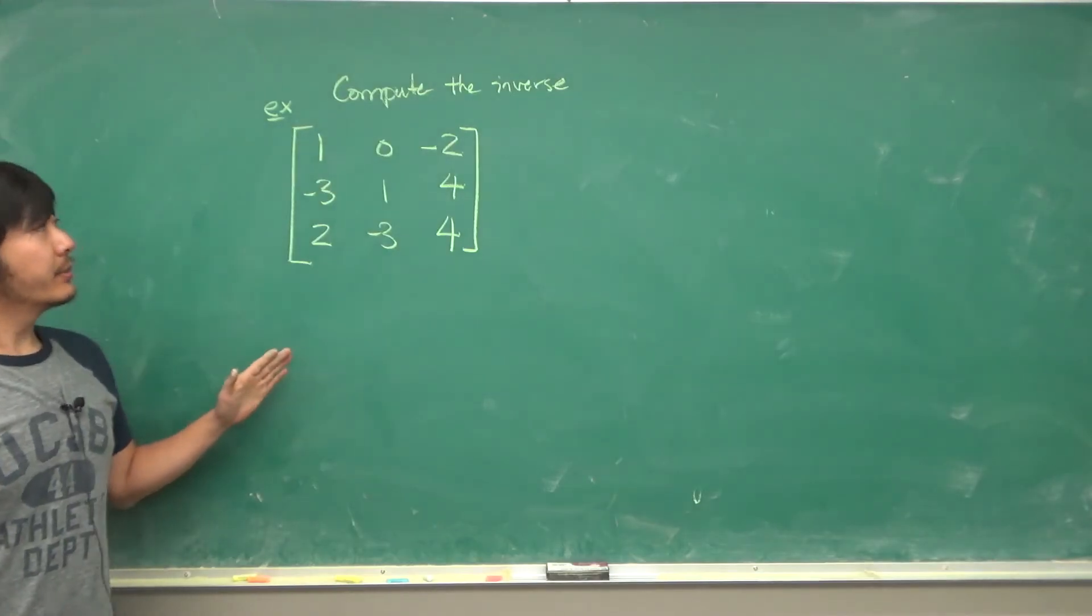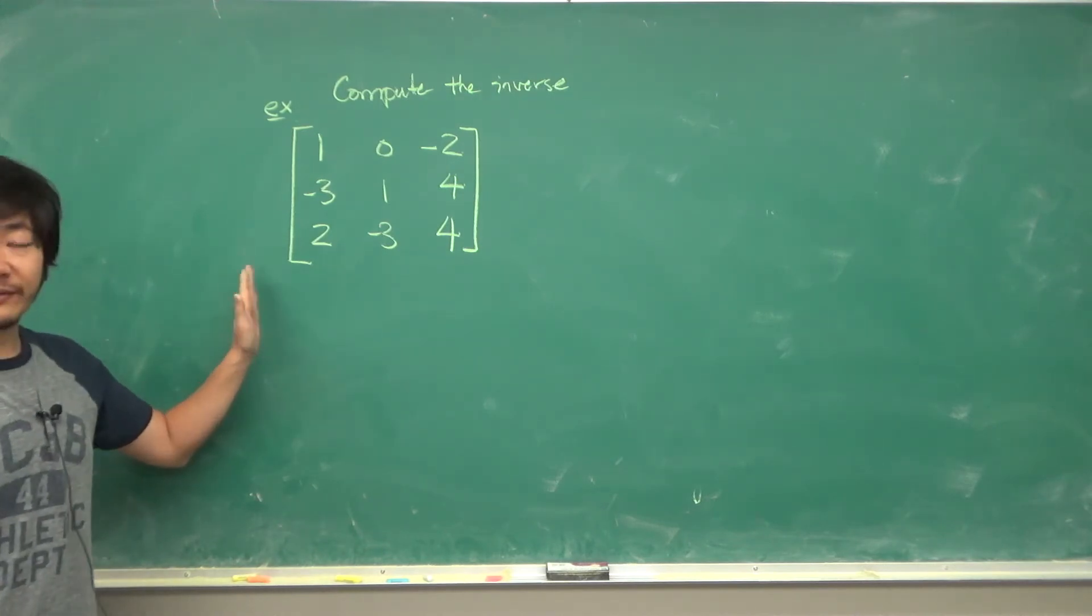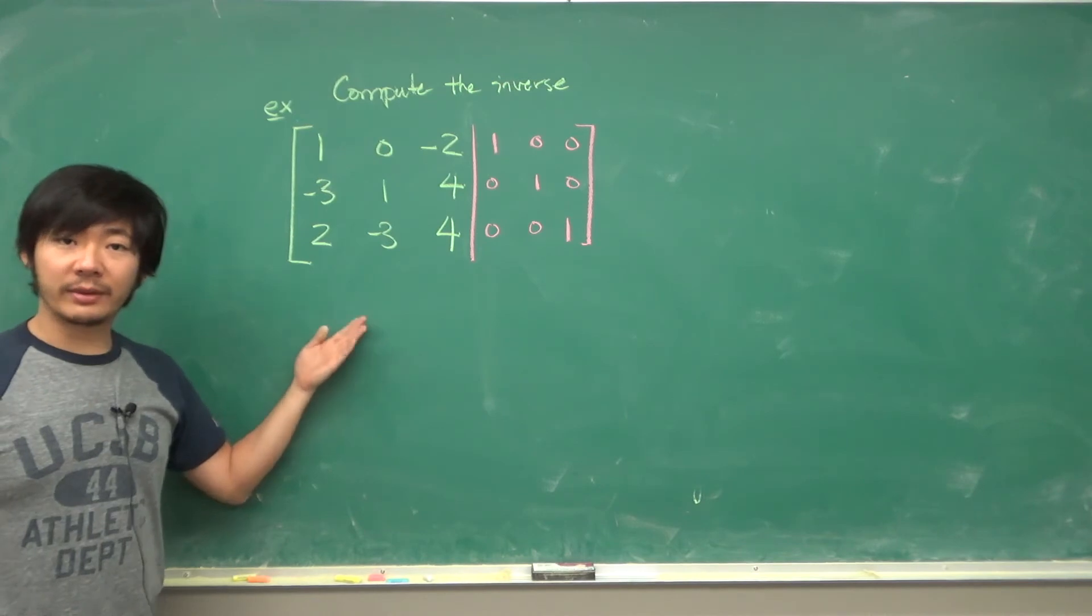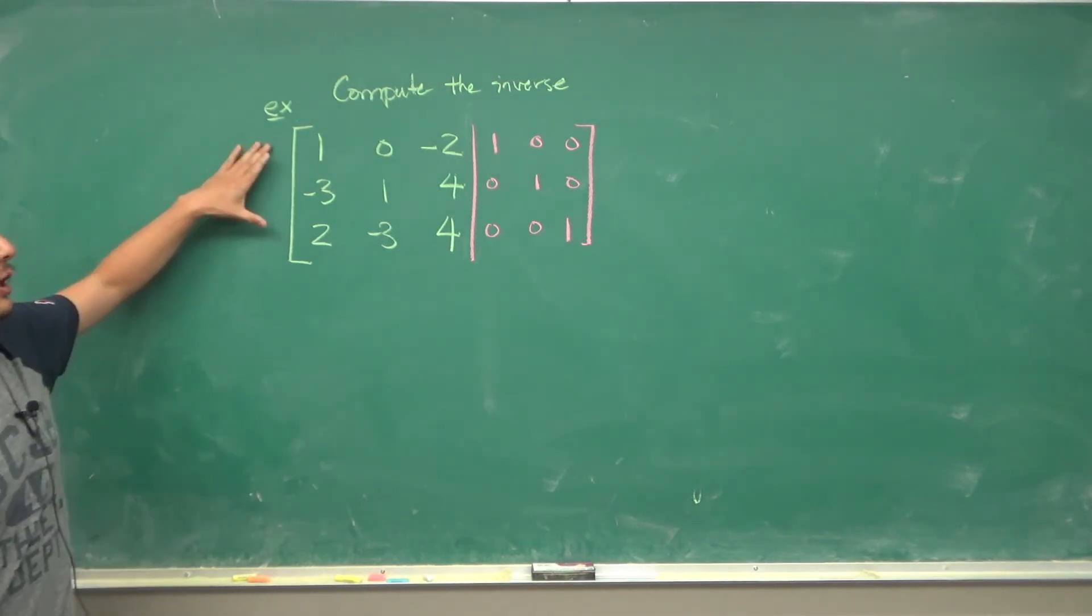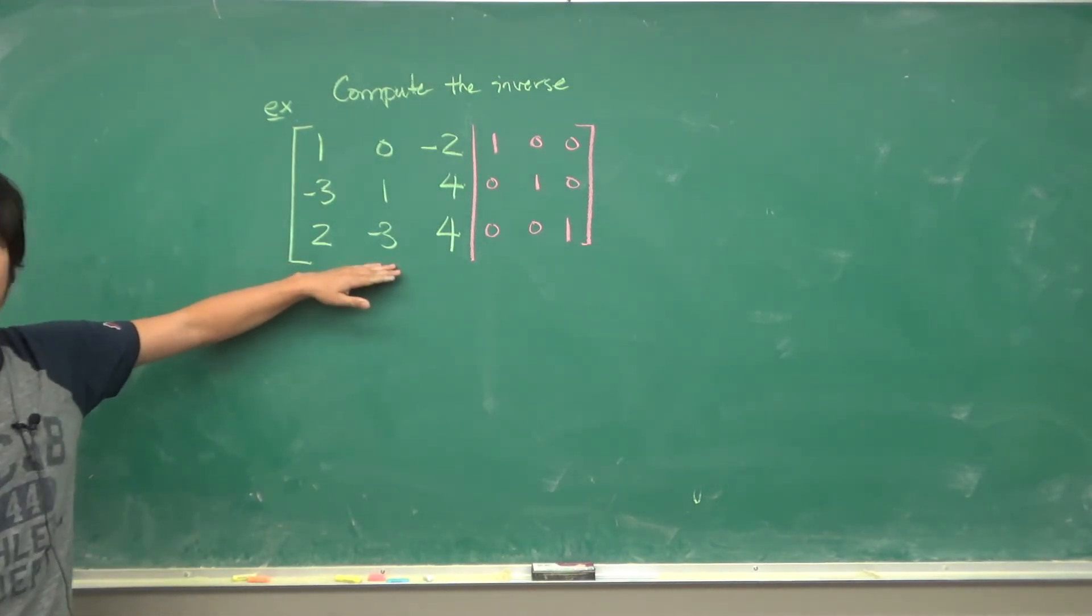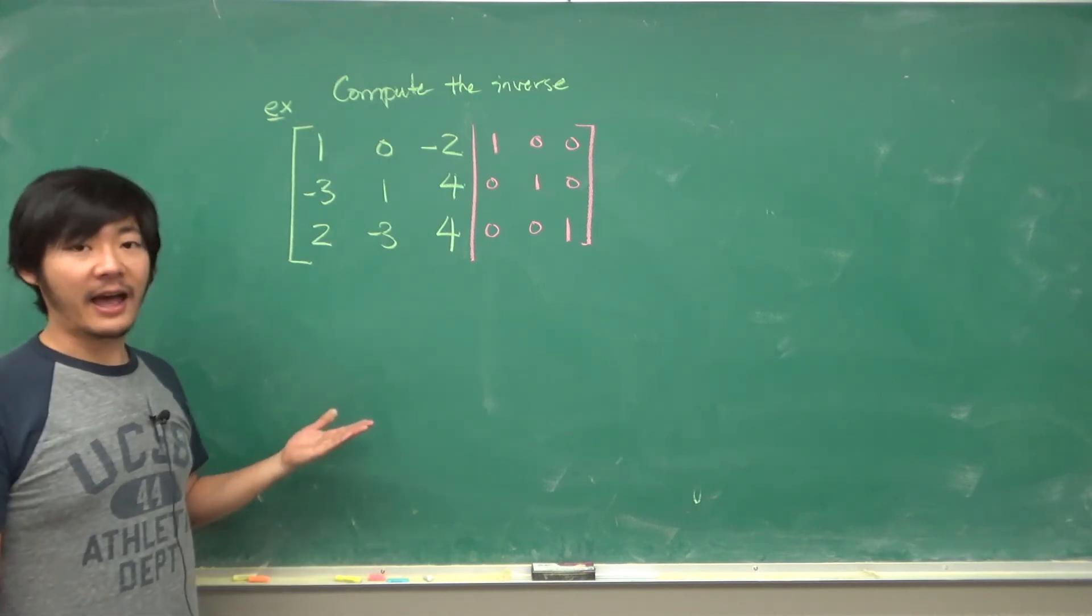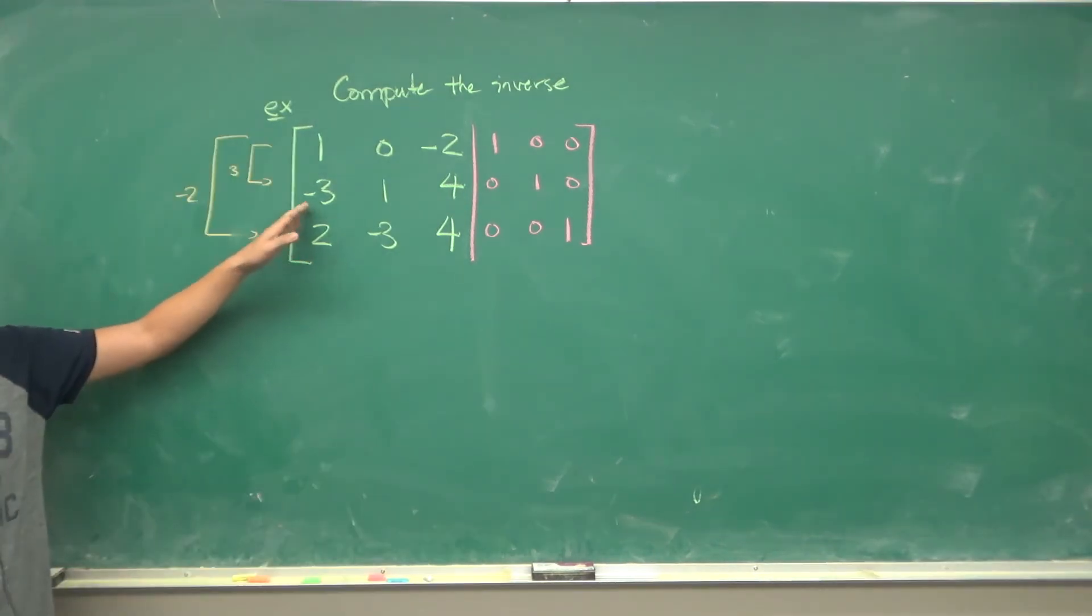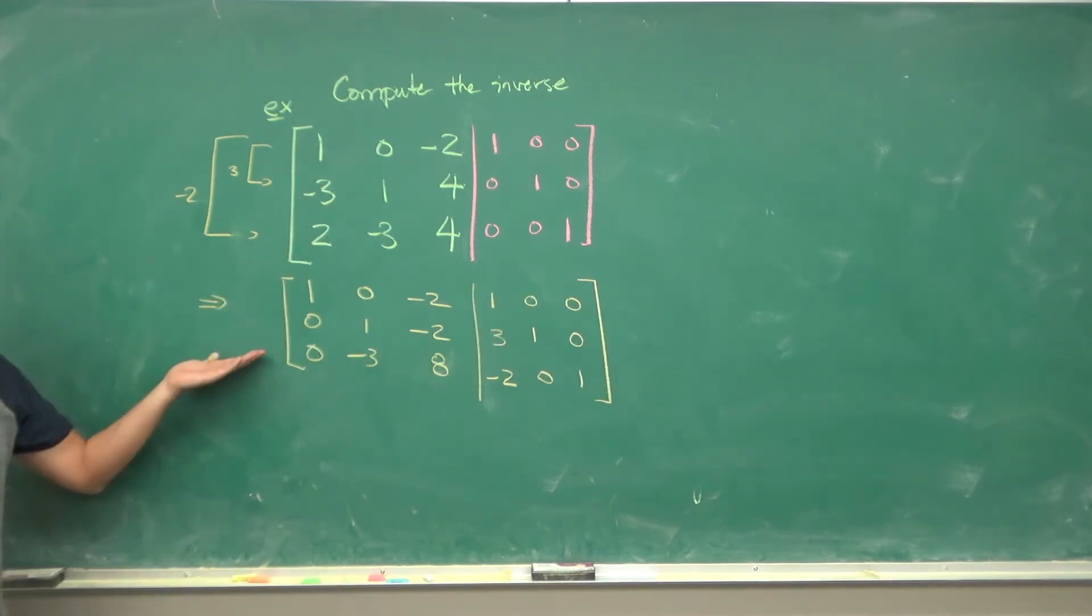So let's do a quick example. Let's compute the inverse of this 3 by 3 matrix. To do so we want to form this augmented matrix and apply row reduction until this side is in reduced row echelon form. In fact it has to be the identity matrix or else it's not invertible. So first we want to make these 0 which means we get this matrix.